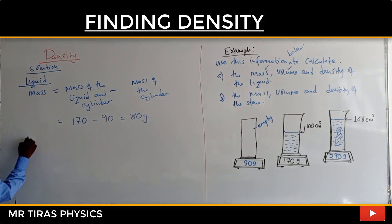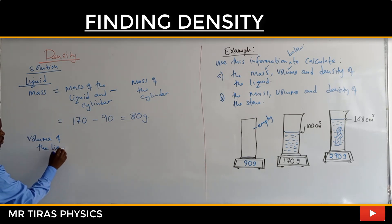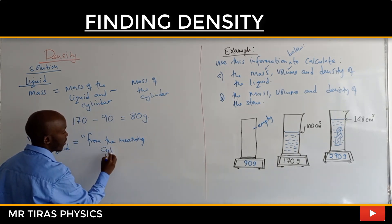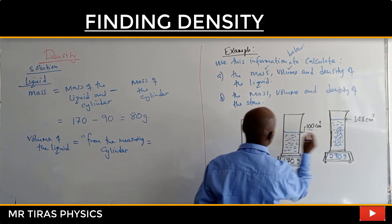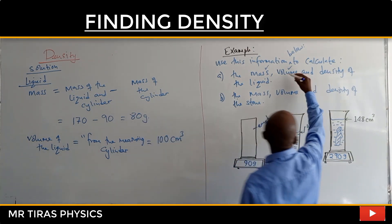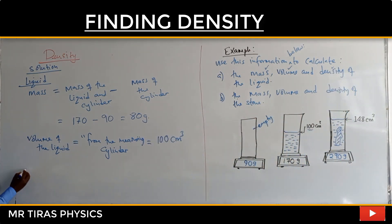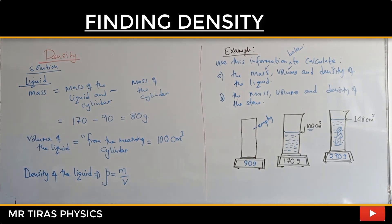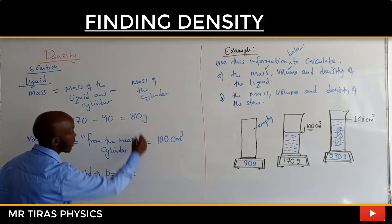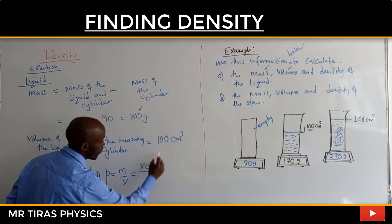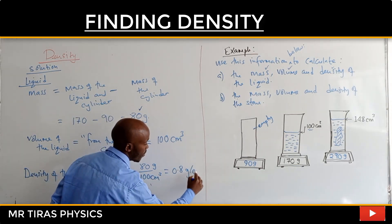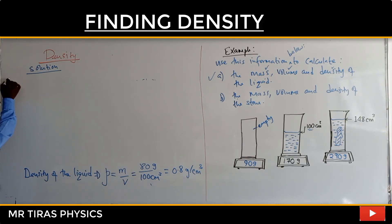Now we need the volume of the liquid from the measuring cylinder — that's 100 centimeter cubed. Then for the density of the liquid, density equals mass over volume. So we do the mass, which is 72, divided by volume 100, and we get 0.8 grams per centimeter cubed.